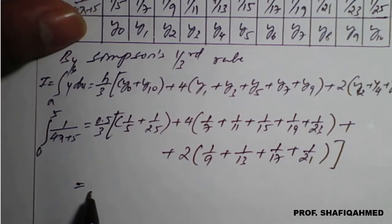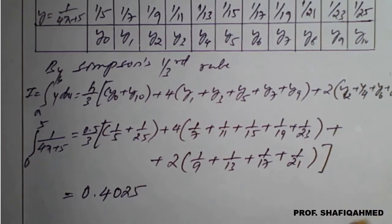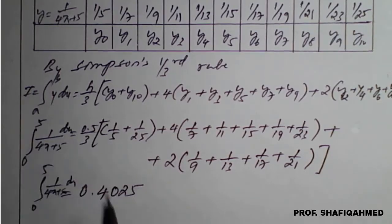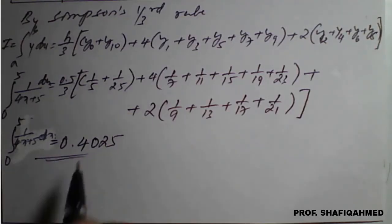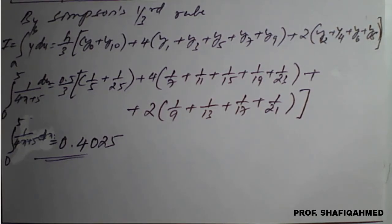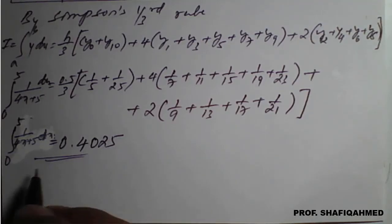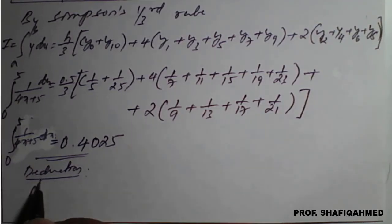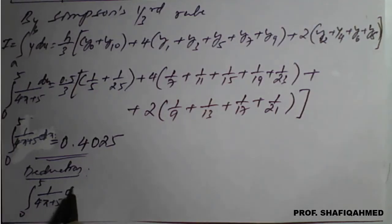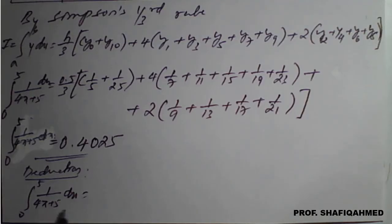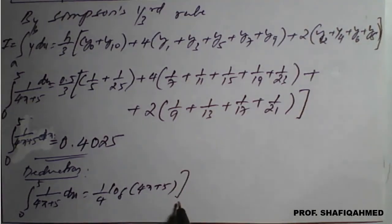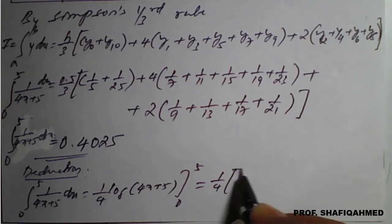So I will take 0.4025 as the answer. Therefore the answer of integration 0 to 5 of 1 upon (4x + 5) dx is 0.4025. This is the required solution. Now, in the question they have said 'hence find log 5', so for the deduction part: the given integral 0 to 5 of 1 upon (4x + 5) dx — we go for the direct result: integration of 1 upon (4x + 5) is log(4x + 5) divided by 4.